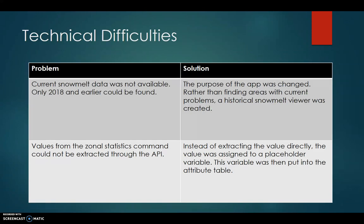We found some hard technical difficulties, particularly using zonal statistics in our first model — for whatever reason it just would not work with geoprocessing. So we had to do a workaround, as Chris was explaining, making it a little more complicated. We also had to change our scope to just 2018. We were very ambitious in the beginning and just had to scale some things down.